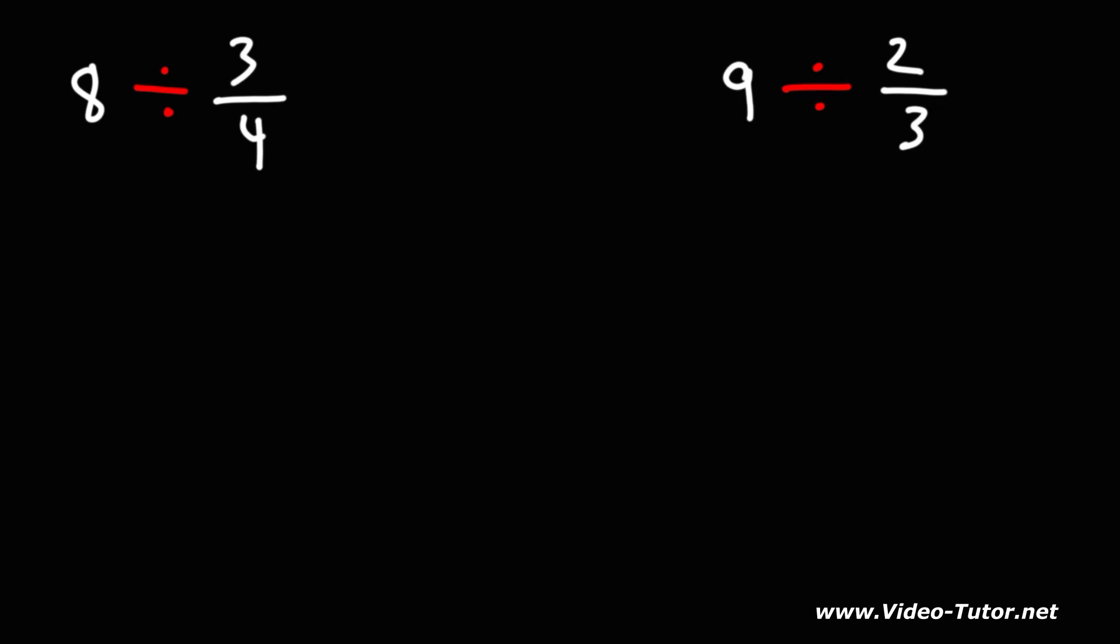We have 8 divided by 3 over 4. The first thing you want to do is write 8 as 8 over 1. You want to convert the whole number into a fraction by putting it over 1.